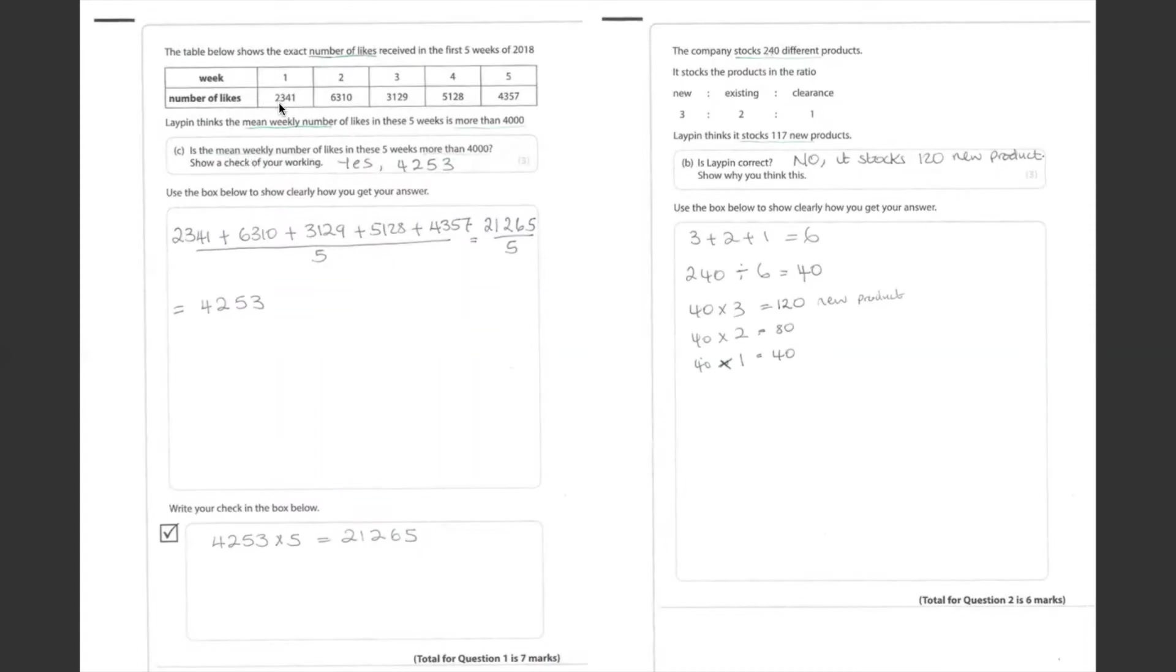Here, we're finding the mean weekly number of likes. We add all the numbers together and divide by the number of weeks. That is this down here, divided by 5, it gives us 21,265 divided by 5. The answer is 4,253.